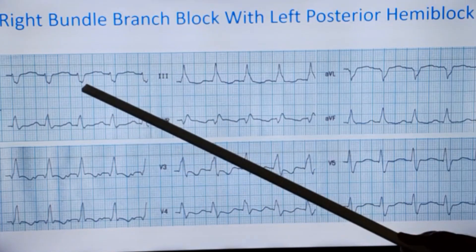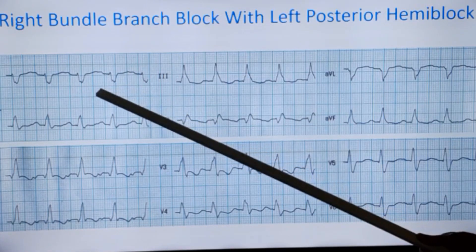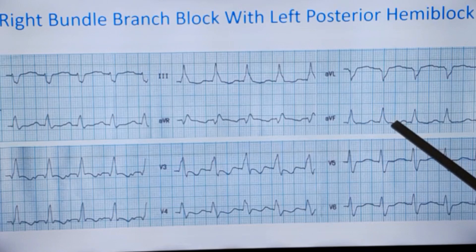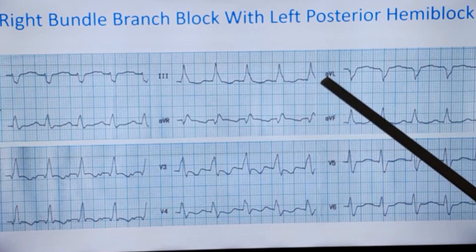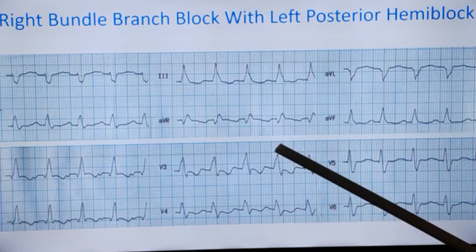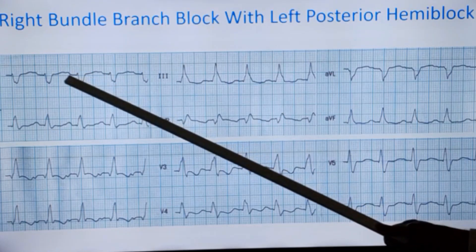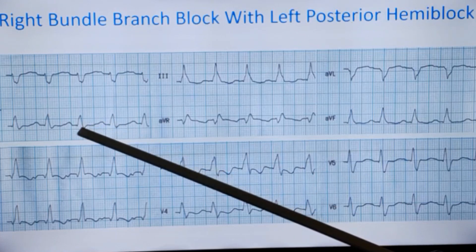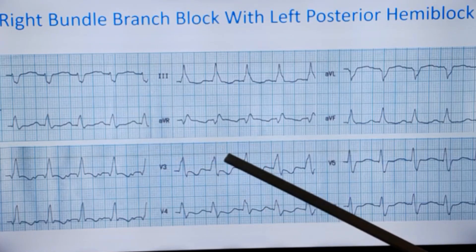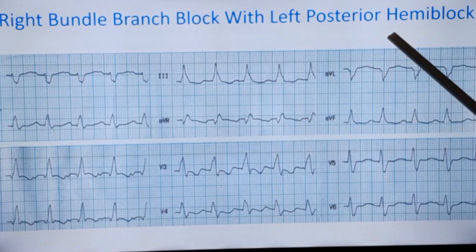These features — that is right axis deviation — negative complexes in lead 1 with positive complexes in AVF give you right axis deviation, as seen here. That is also a feature of left posterior hemiblock: right axis deviation. In addition, we are seeing the small R, deep S complexes in lateral leads and small Q, tall R pattern in inferior leads. These are all features of left posterior hemiblock.